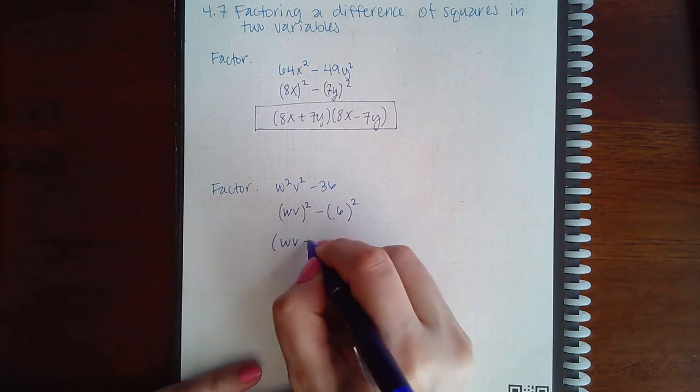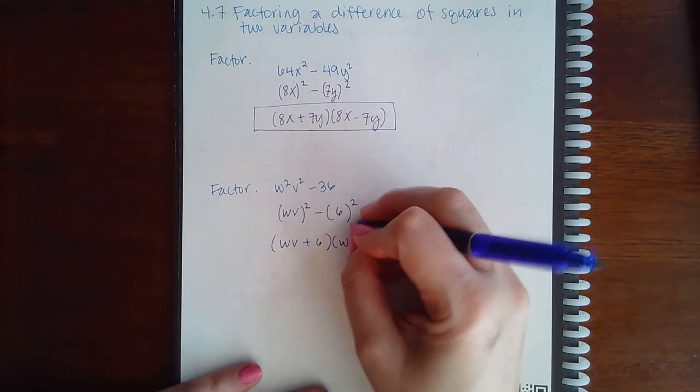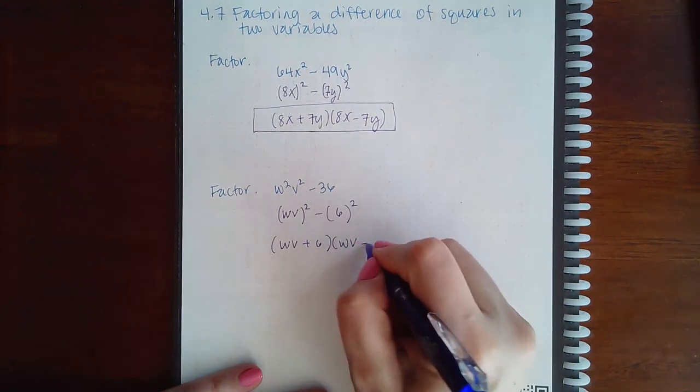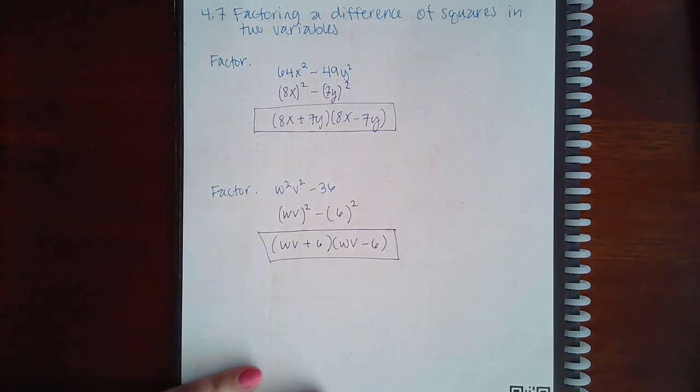So then I'm going to have wv plus 6 and wv minus 6. And you can multiply that out, combine like terms to check your answer.